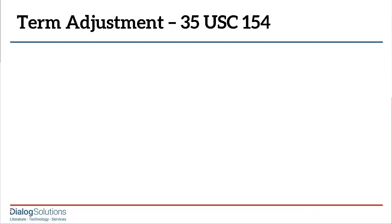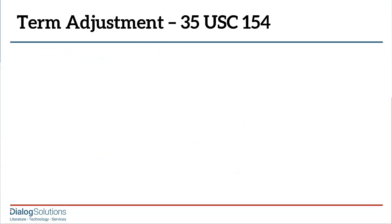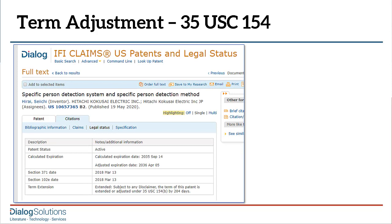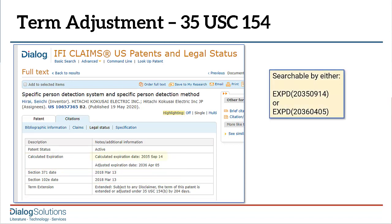There are two different ways in Title 35 of the U.S. Code for a patent owner to seek an extension or adjustment of the expiration date beyond the normal 20 years. The first would be a patent term adjustment under Section 154. If the Patent Office has not issued a patent within three years after the application was filed, then, depending on the reasons and other factors, the patent owner can apply for an adjustment to give the patent a later expiration date. If that request is granted, the record in IFI reflects it. Note that the original calculated expiration date of September 14, 2035 is still searchable in the EXPD field, and so is the adjusted expiration date of April 5, 2036.